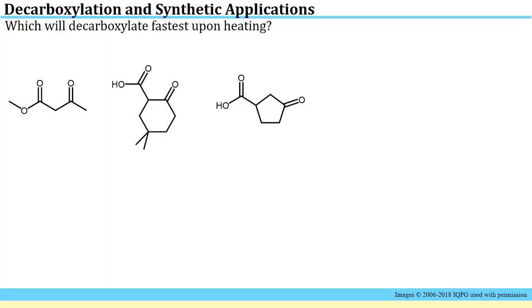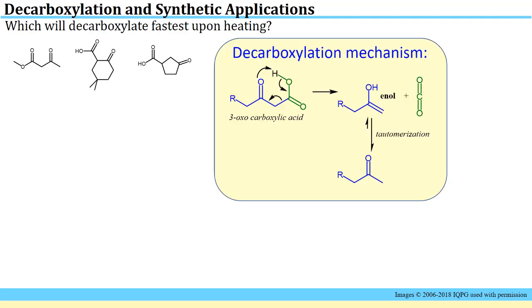The first skill we need to acquire in this topic is to recognize when decarboxylation can happen. One type of question you might be faced with asks which compound will decarboxylate fastest upon heating. To address this, you first have to understand the general mechanism for decarboxylation. You need to have a carboxylic acid unit that can leave as CO2, and in order to facilitate that, you have to have another carbonyl unit.